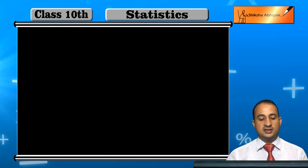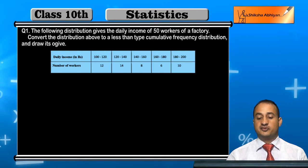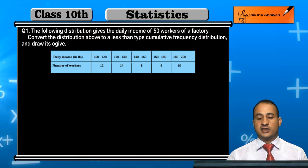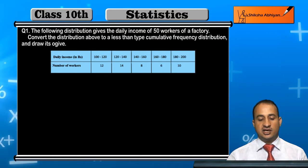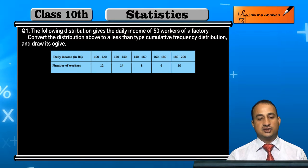The first question is: the following distribution gives the daily income of 50 workers of a factory. The daily income ranges are 100–120, 120–140, and so on, and the number of workers is 12, 14, 8, 6, and so on.